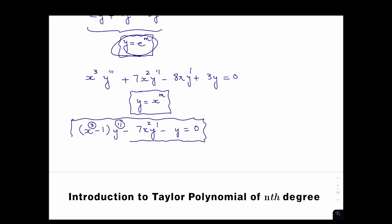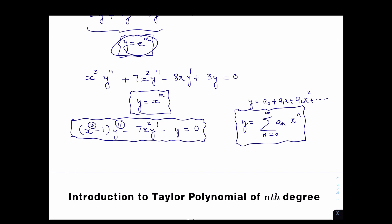We're going to assume that these types of differential equations are solved by guessing solutions that look like an infinite power series: a₀ + a₁x + a₂x² + ..., which can be written as the sum of aₙxⁿ from n = 0 to infinity. The goal is to find the coefficients aₙ, because if you know those constants, you know the actual solution — expressed as an infinite power series or as a polynomial.